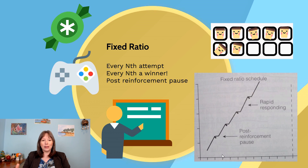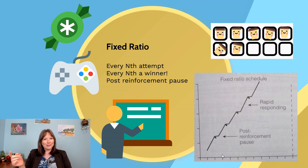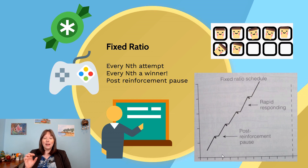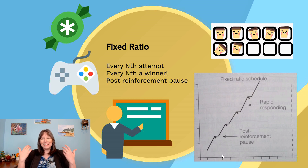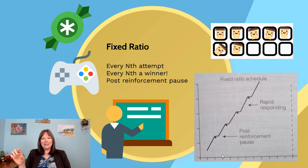This happens in everyday life — like in a video game where you have to do a combo three times to unlock a special move, or a mobile game where every fifth match unlocks a new level. Fixed refers to the fact that it's always the same amount — every third, fifth, or tenth time. Ratio refers to the number of times you perform the behavior. A punch card loyalty program is a great example: collect 10 stamps and get a free coffee.